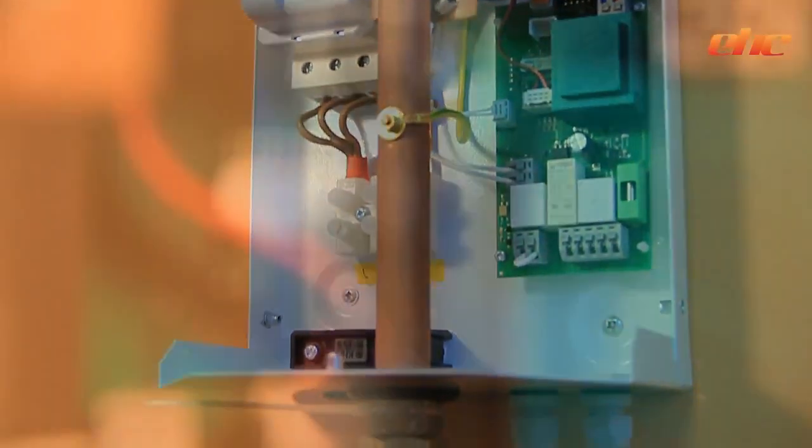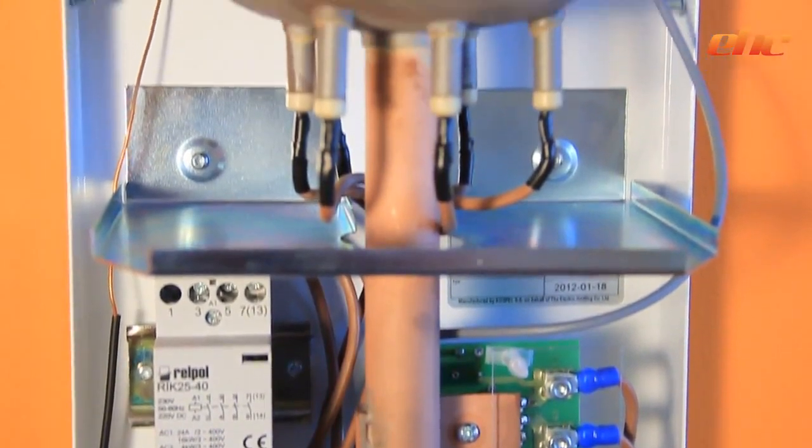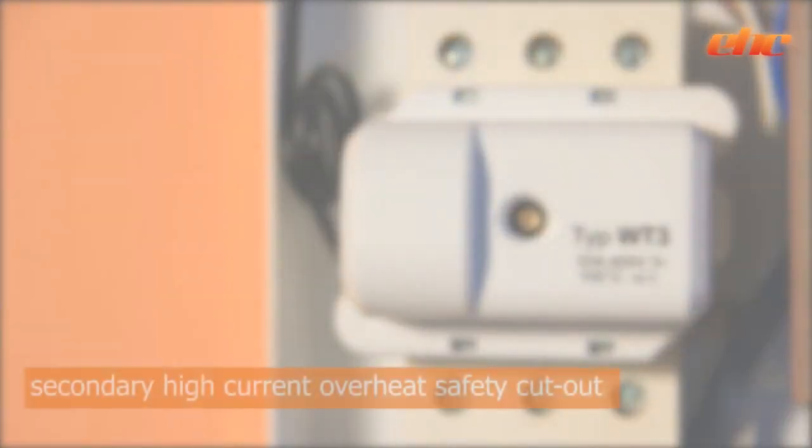The boiler can be installed and controlled with either volt free or 240 volt controls. All parts within the Slim Jim are easily replaced for any future maintenance. For added safety EHC boilers are the only electric boilers in the UK market with a secondary high current overheat safety cutout.